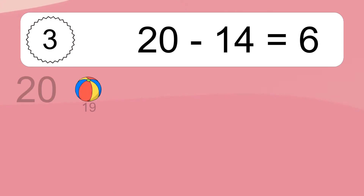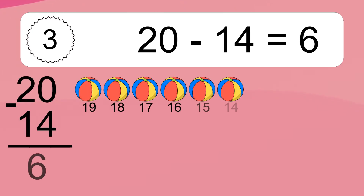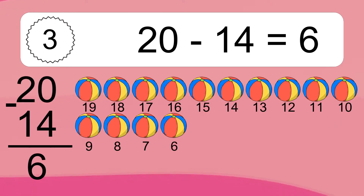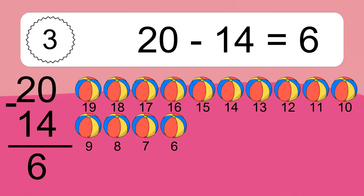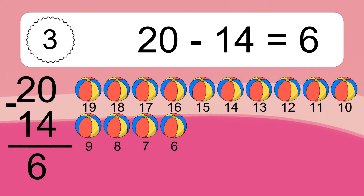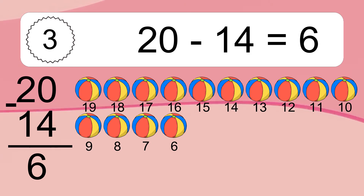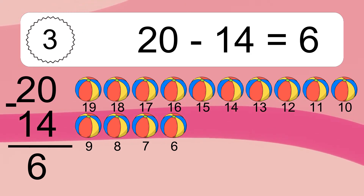20 minus 14 equals what? 20 minus 14 equals 6. Let's count it: 19, 18, 17, 16, 15, 14, 13, 12, 11, 10, 9, 8...